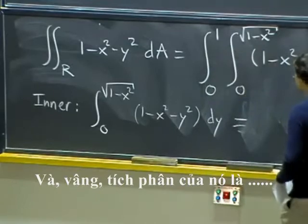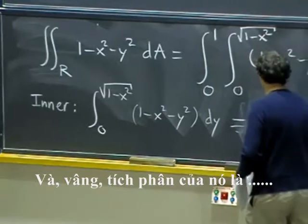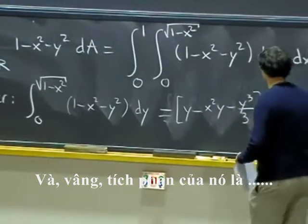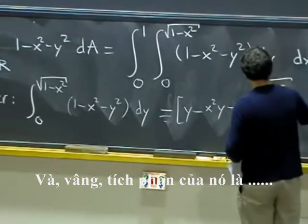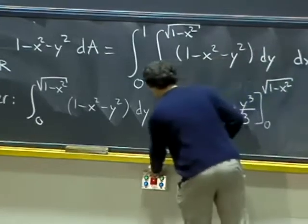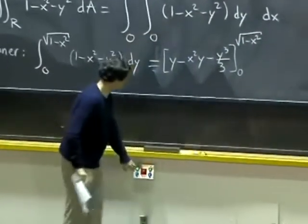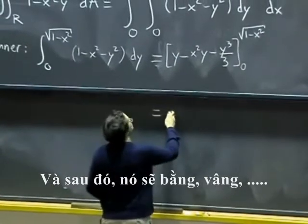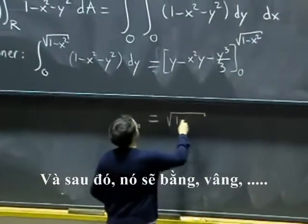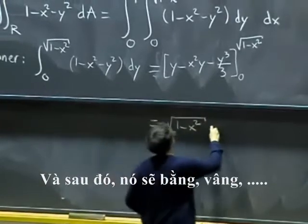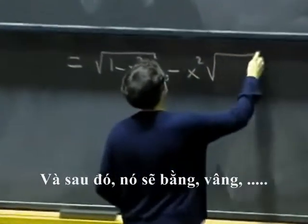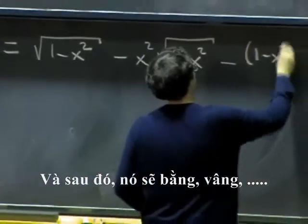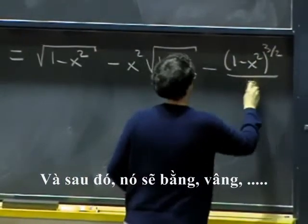And, well, that integrates to y minus x squared y minus y cubed over three from zero to square root of one minus x squared. And then, that becomes root of one minus x squared minus x squared root of one minus x squared minus one minus x squared to the three halves over three.